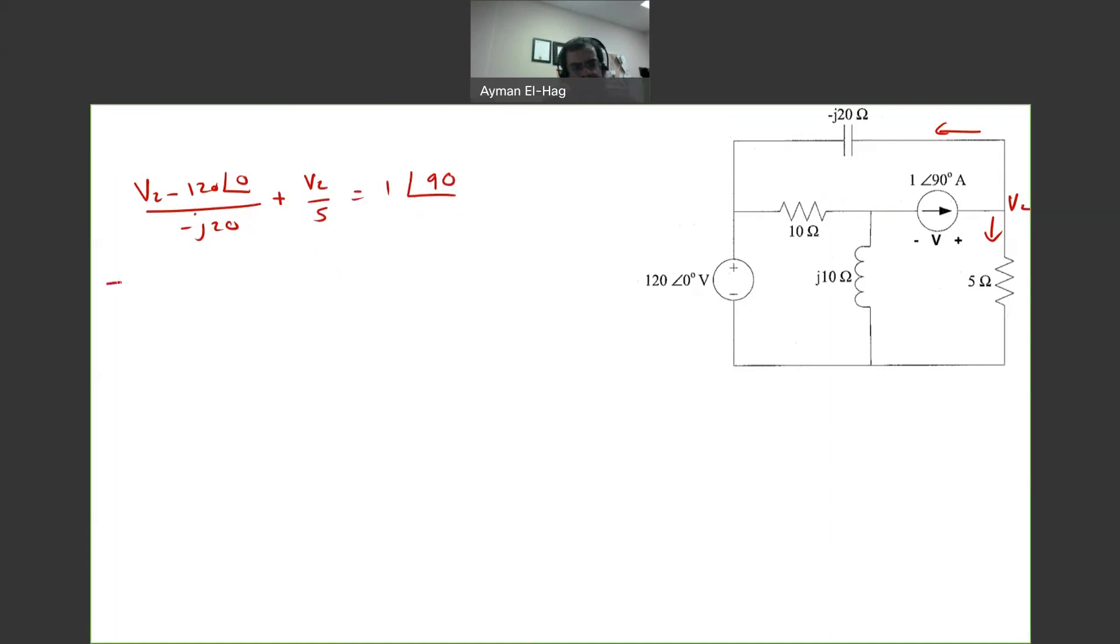So one way, as I mentioned in the previous step, I will multiply by minus J20 to get rid of the minus J20 in the denominator. So we will have here, V2 minus 120 angle of 0, plus minus J20 times V2, divided by 5, equal to.